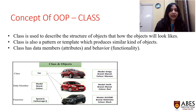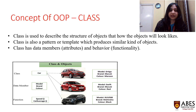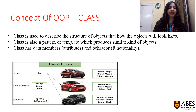Class is used to describe the structure of an object — how the object will look. Class is also a pattern or template which produces similar kinds of objects. Class is basically a data structure specified by attributes and its functionality. For example, if we have made a car class, then it will have a model, a brand, and a color.